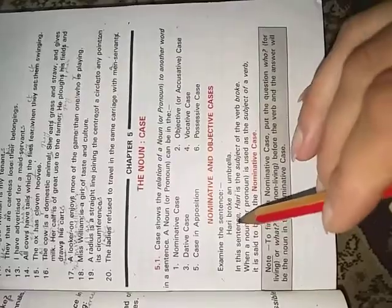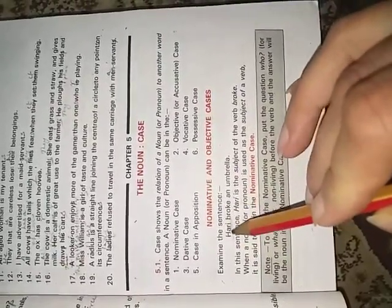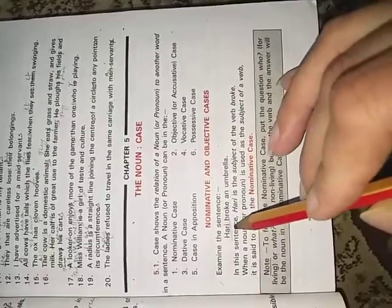Here, one is the nominative or the objective case. In the example here, Harry broke an umbrella. Here, Harry is in the subjective form. It is before the verb, so here it is a subjective form. Whenever the noun is in the subjective form, it is called the nominative case.